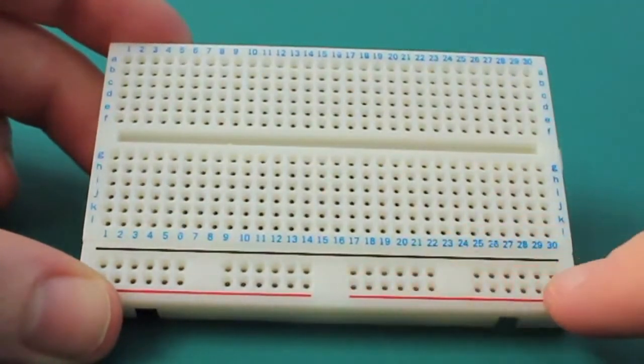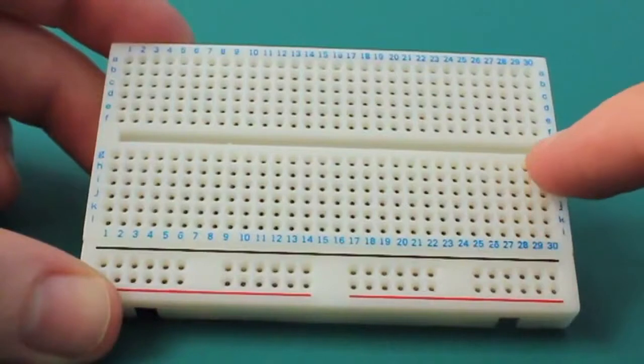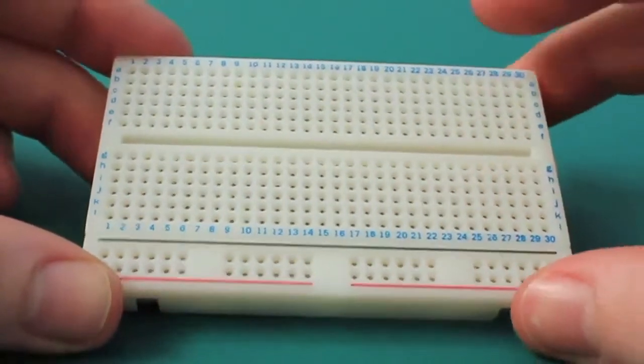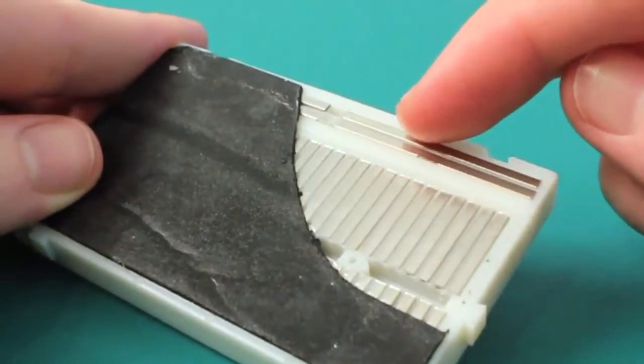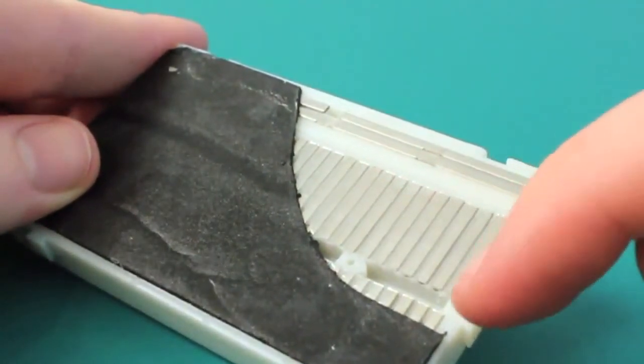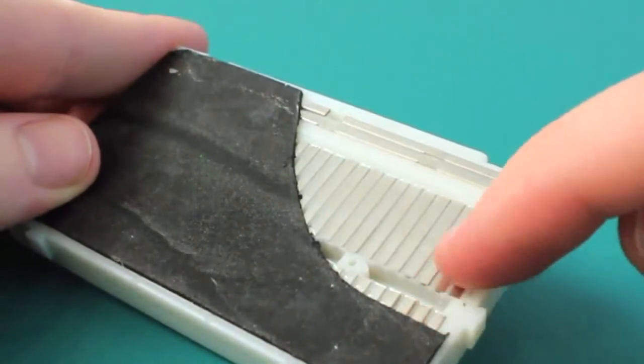Along the bottom we have the power lines, and along the top we have connected rows of pins. Let's take a look at the back. Here we can clearly see how the power rails are connected horizontally, whereas the component rails are connected vertically with a gap in the middle.